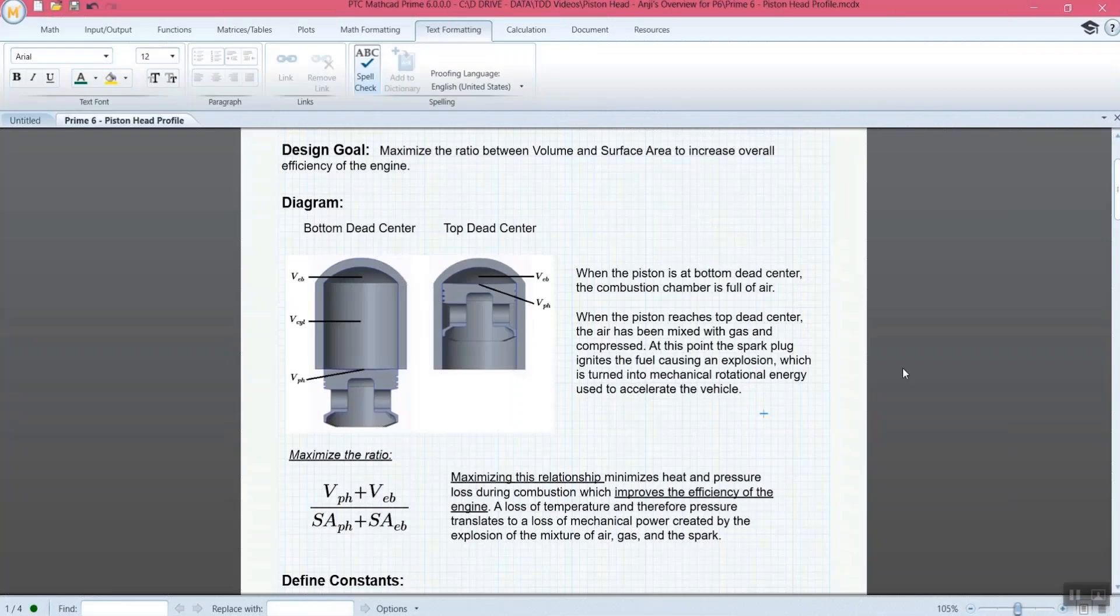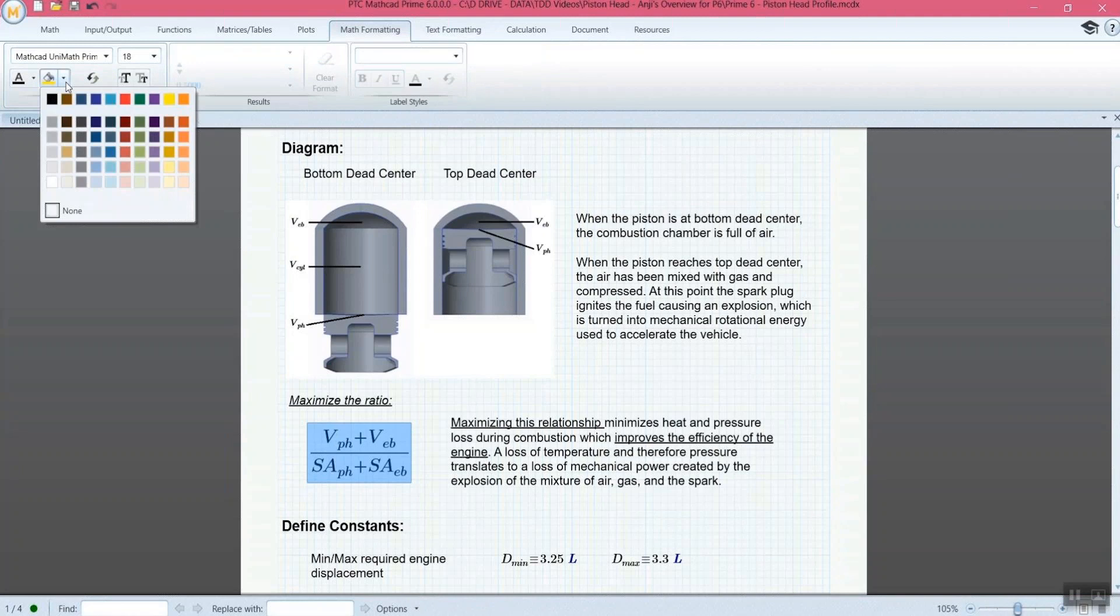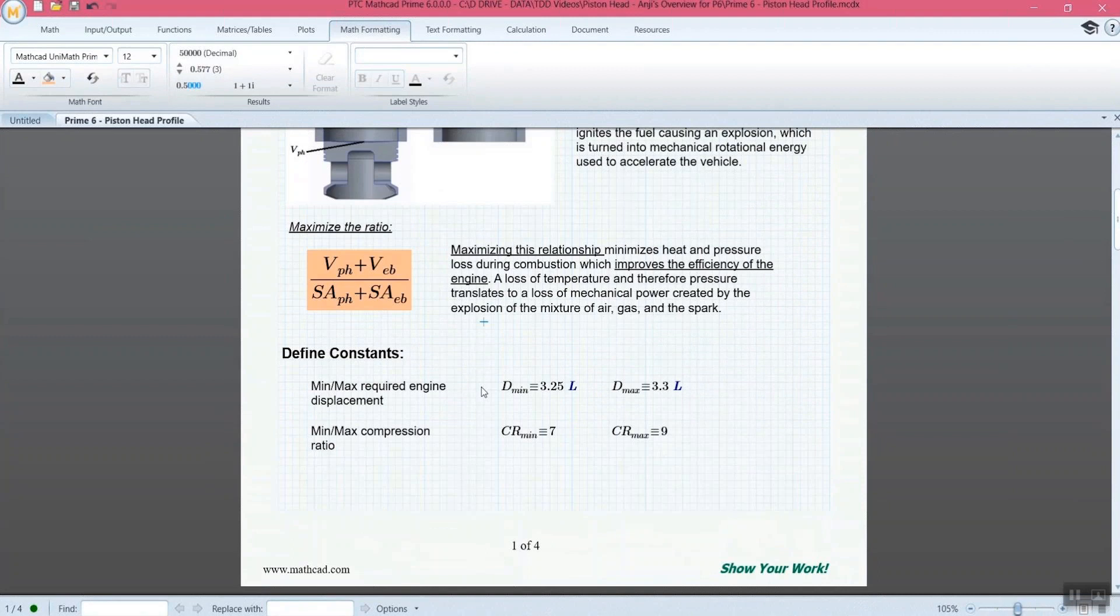So now I'm going to move into the demonstration portion and I'll show you what some of this might look like. So here's our MathCAD user interface, so we have a page you can see here with all sorts of different text and graphics and information. And we have here our first equation and this use case is to improve the efficiency of an engine by maximizing the ratio of the volume to surface area for this piston head. So we've given a short description at the top.